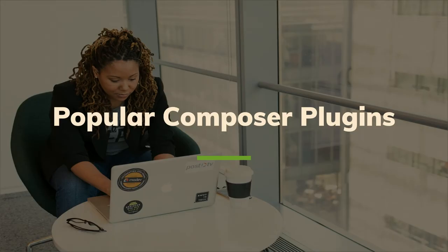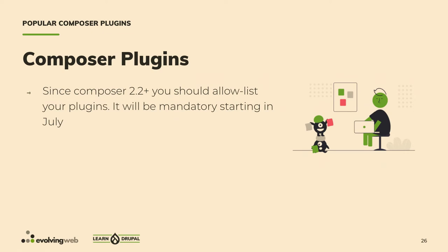Now let's talk about popular Composer plugins for Drupal. Since Composer 2.2, there is a new configuration element in composer.json called allowed-plugins — it's an allowlist instructing Composer which plugins are allowed to run. This is currently optional but will eventually be mandatory; if a plugin isn't allowlisted, it won't run at all. Keep that in mind.